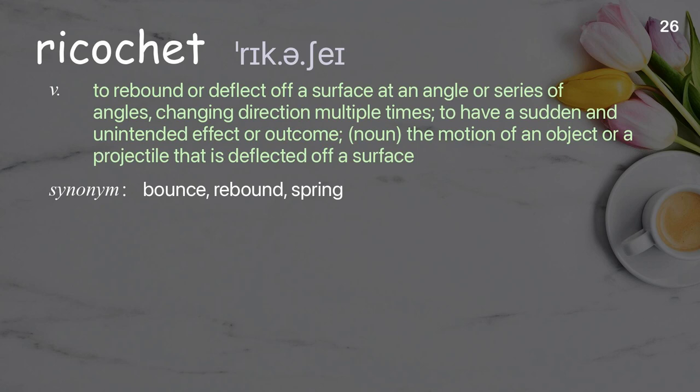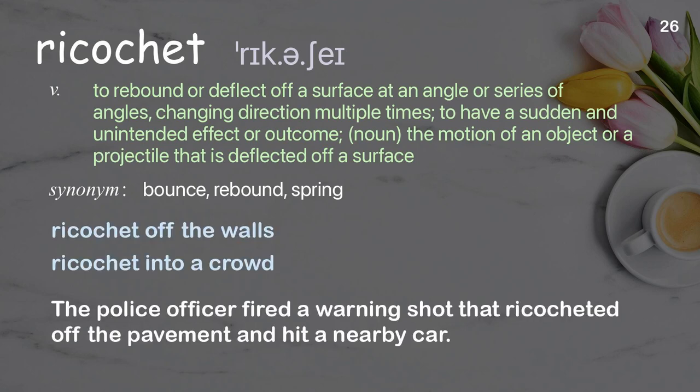Ricochet: to rebound or deflect off a surface at an angle or series of angles, changing direction multiple times; to have a sudden and unintended effect or outcome. Noun: the motion of an object or projectile deflected off a surface. Examples: ricochet off the walls, ricochet into a crowd. The police officer fired a warning shot that ricocheted off the pavement and hit a nearby car.